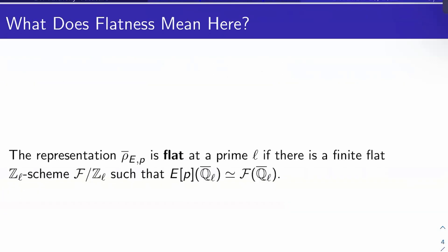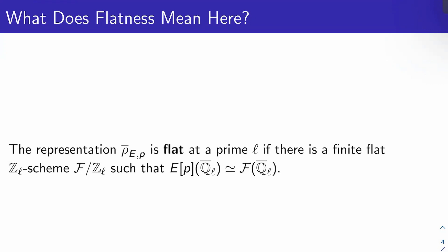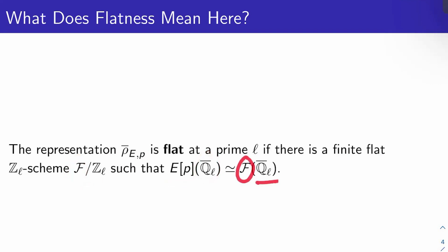What does flatness mean in this context? We're going to be concerned with when the residual representation rho-bar_{E,P} is flat. That representation is flat at a prime L if there's a finite flat Z_L group scheme F over Z_L such that the Q-bar_L points of the P-torsion of E are isomorphic to the Q-bar_L points of F. We're going to be focusing a lot on when these representations are attached to elliptic curves unramified at various primes, but you're always going to have ramification at P itself. So flatness is the correct analog of unramification at the prime P itself.